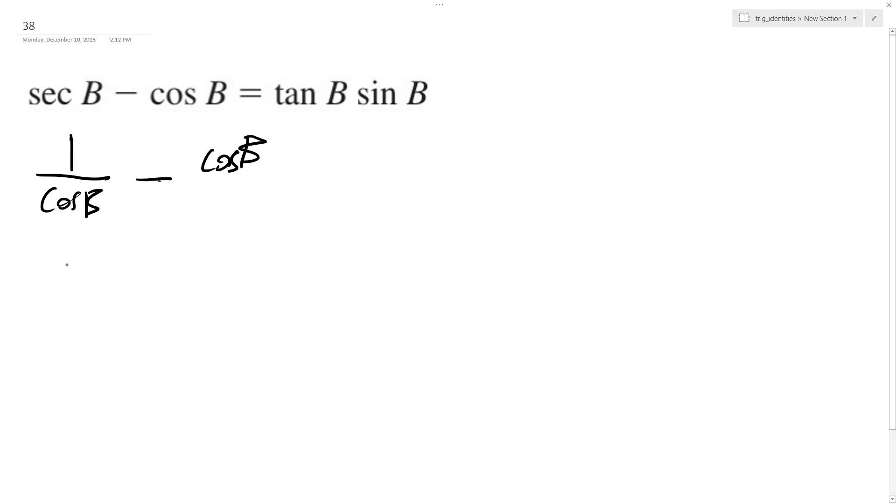So I get a common denominator, 1 over cosine b, and then I multiply cosine b times cosine b over cosine b, so I get cosine squared b over cosine b.